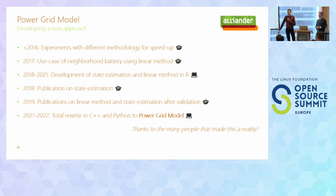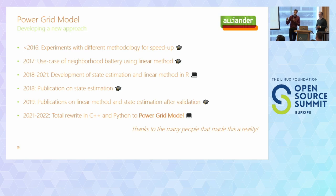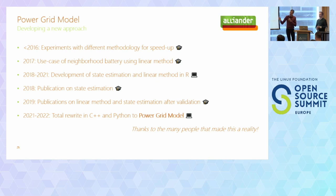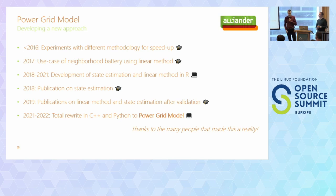Going from that battery experiment in the neighborhood, the code was originally written in R. Later we did a rewrite in C++ and Python to make it fast. More importantly, there was scientific research to come up with new models to linearize the typical way of calculating. Normally you do a Newton-Raphson iterative method — you iterate between voltages and current until the solution converges within an error bound. If you can linearize that problem, you get there sooner, though you introduce some error. With scientific proof, we validated that this linear method actually works for us, and for most cases it's good enough — giving us a major speed boost.